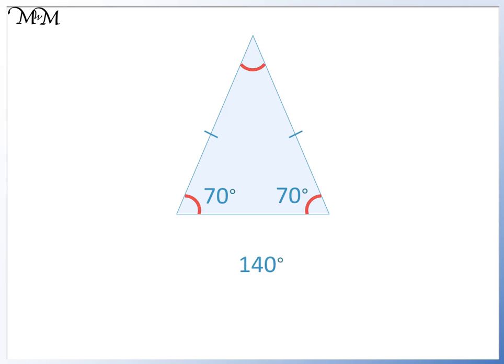Angles in a triangle add up to 180 degrees, so 70 plus 70 equals 140 degrees. We can take 140 away from 180: 180 take away 140 equals 40, so the missing angle is 40 degrees.